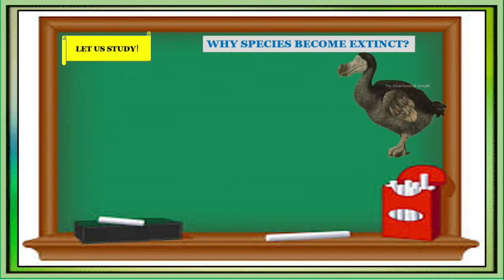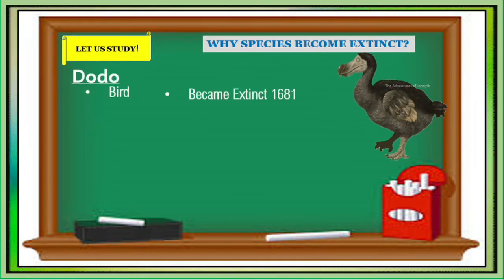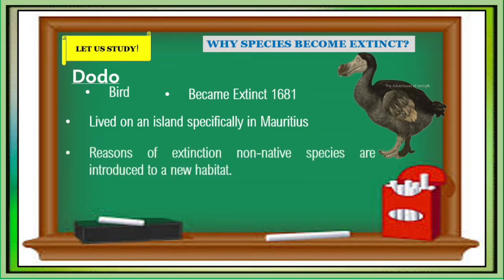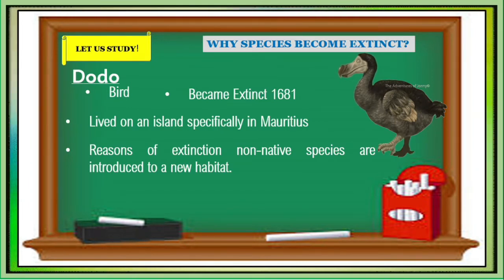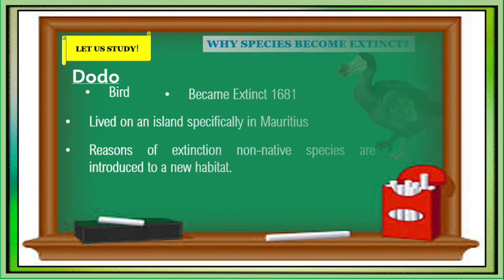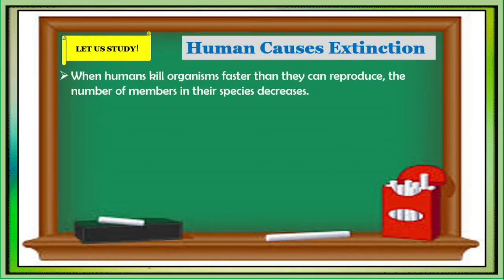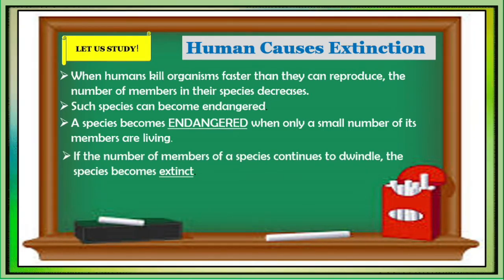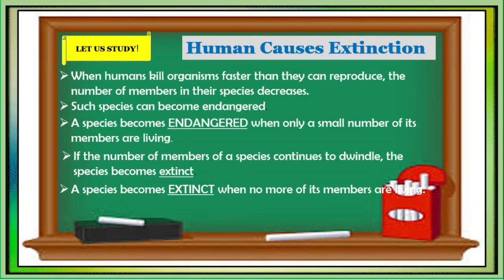The dodo became extinct in 1681. It lived on an island, specifically in Mauritius. A reason for its extinction was that non-native species were introduced to its habitat. Humans also cause extinction when they kill organisms faster than they can reproduce. Such species can become endangered. A species becomes endangered when only a small number of its members are living. If the number of members of a species continues to dwindle, the species becomes extinct.